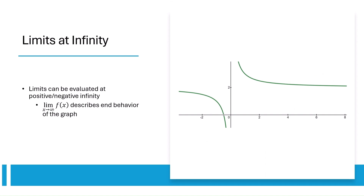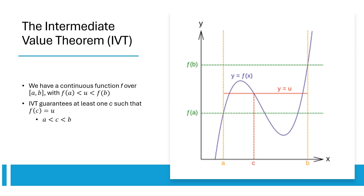As x approaches infinity or negative infinity, the behavior of a function is analyzed using limits at infinity. This helps determine horizontal asymptotes and understand long-term trends of a function. The IVT states that if a function is continuous on the closed interval from a to b, and a number lies between f of a and f of b, then there must be at least one value c in the open interval a to b where f of c equals that number.